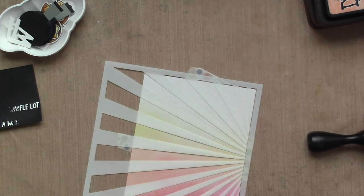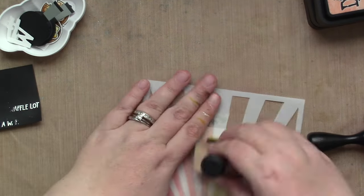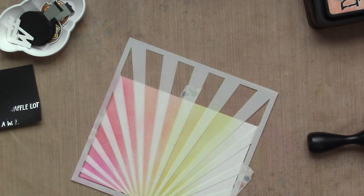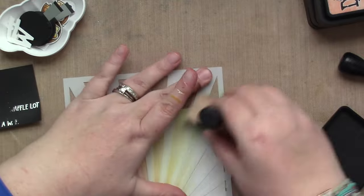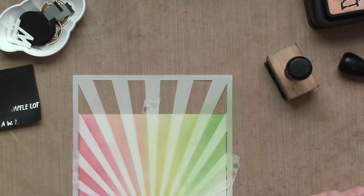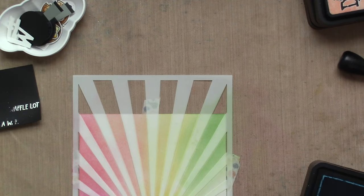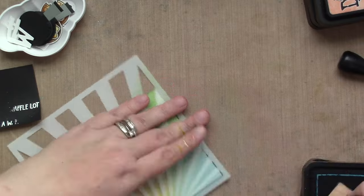I am using distress inks to ink blend on some fog cardstock. I am using a rainbow of colors: picked raspberry, abandoned coral, dried marigold, squeezed lemonade, mowed lawn, and next I am going to use mermaid lagoon.